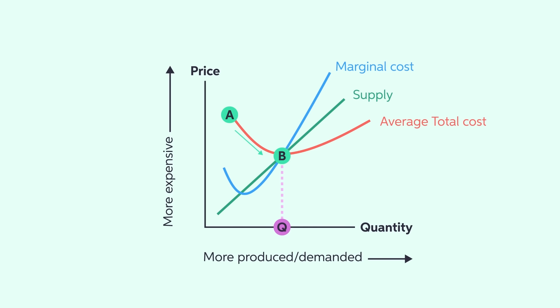For some firms, producing more may lead the marginal cost to be increasing with each unit produced. In that case, the average total cost curve faced by a producer can move from point B to point C. In the real world, that can take the form of more factories being built or more money spent in storing inventories. In the long run, firms may optimize their production strategies and their long-run marginal costs can look steady over time.